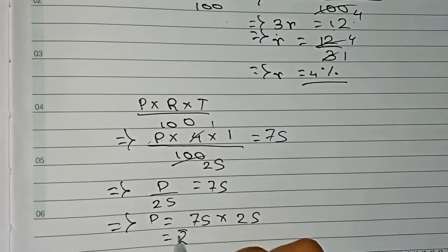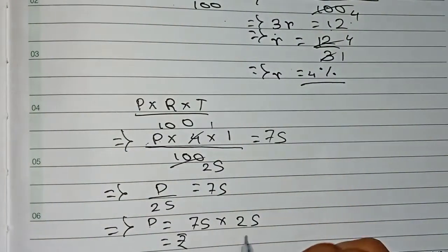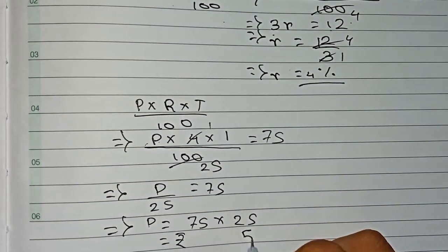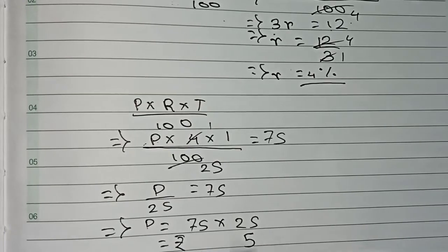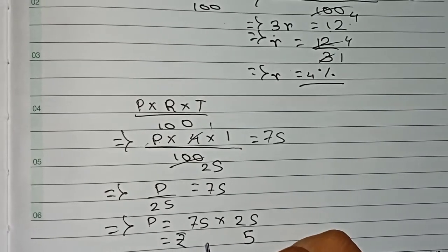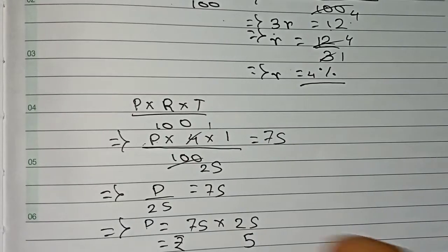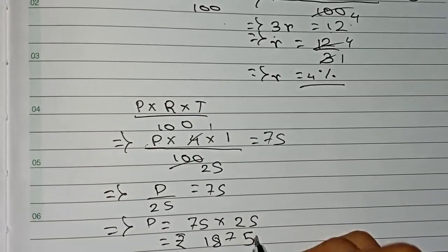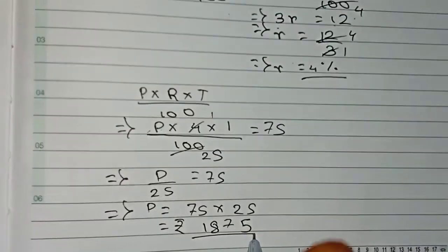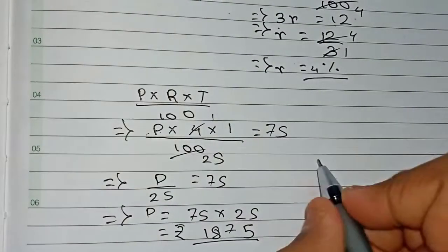25×5 = 125, so 12 is carried. 25×7 = 175, plus 12 = 187. So our principal is ₹1875.